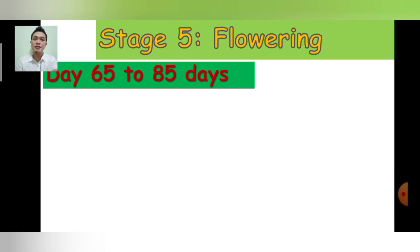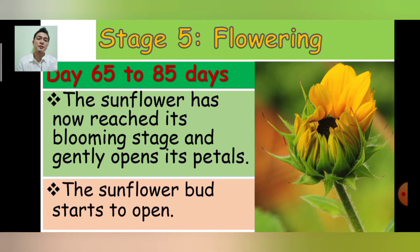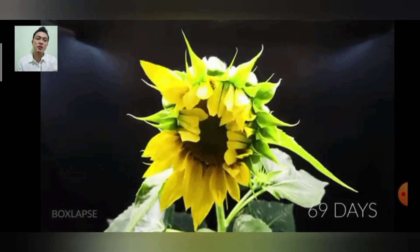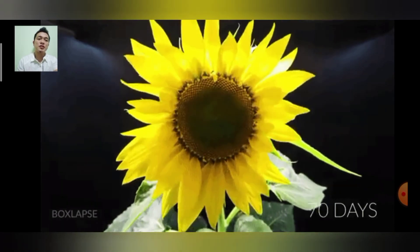Stage 5: Flowering — Day 65 to 85. The sunflower has now reached its blooming stage and gently opens its petals, as you can see on the flower on your screen. Look at the petals of the sunflower — it's slowly growing and showing. The sunflower bud starts to open. As you can see in the GIF, that's the actual opening of the sunflower's bud.